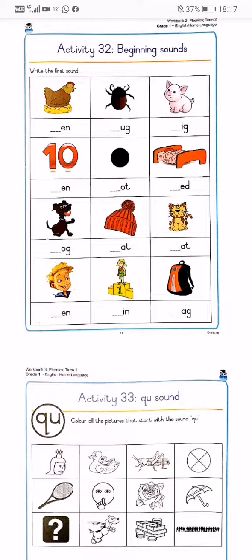Activity 32 is beginning sounds. Write the first sound. You're going to look at the pictures and fill in the missing beginning sounds. I'll do the first row of pictures with you.